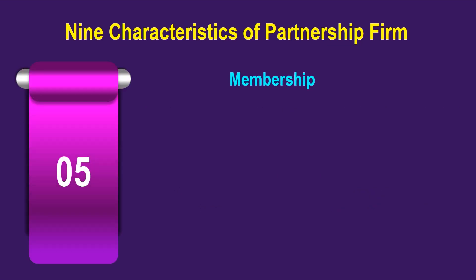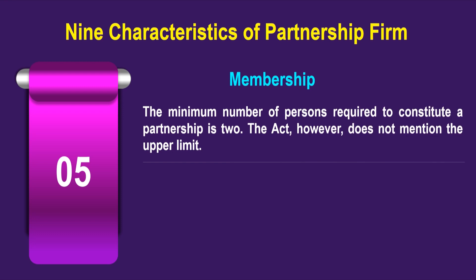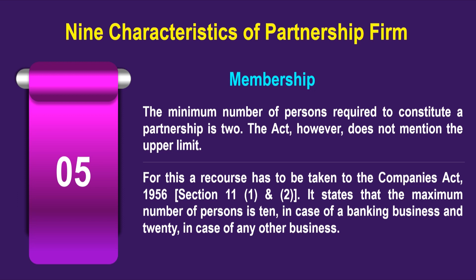The fifth characteristic is membership. The minimum number of persons required to constitute a partnership is 2. The act does not mention any upper limit; for this, recourse has to be taken to the Companies Act 1956, Section 11(1) and (2), which states that the maximum number of persons is 10 in the case of a banking business and 20 in the case of any other business.